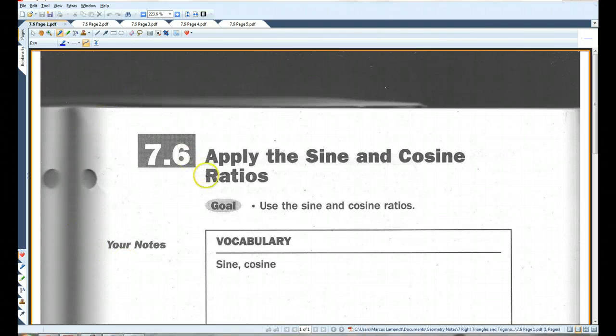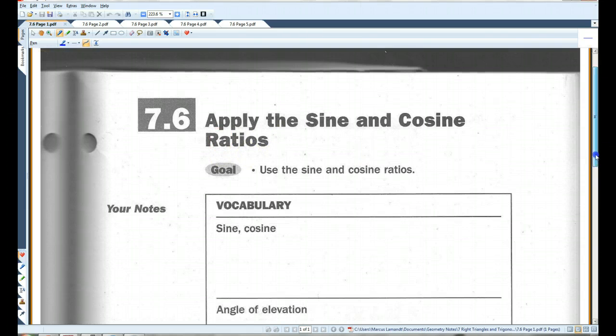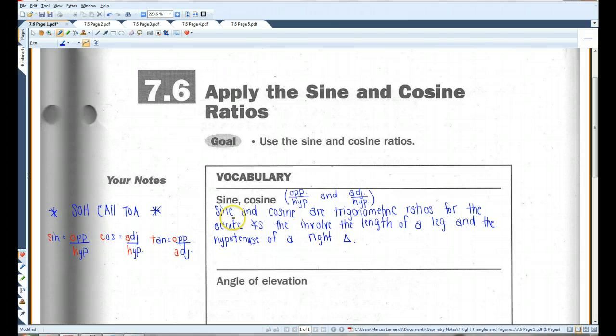If you guys could please turn to 7.6, apply the sine and cosine ratios. Sine and cosine are trigonometric ratios for the acute angles that involve the length of a leg and the hypotenuse of a right triangle. Sine is opposite over hypotenuse, and cosine is adjacent over hypotenuse.